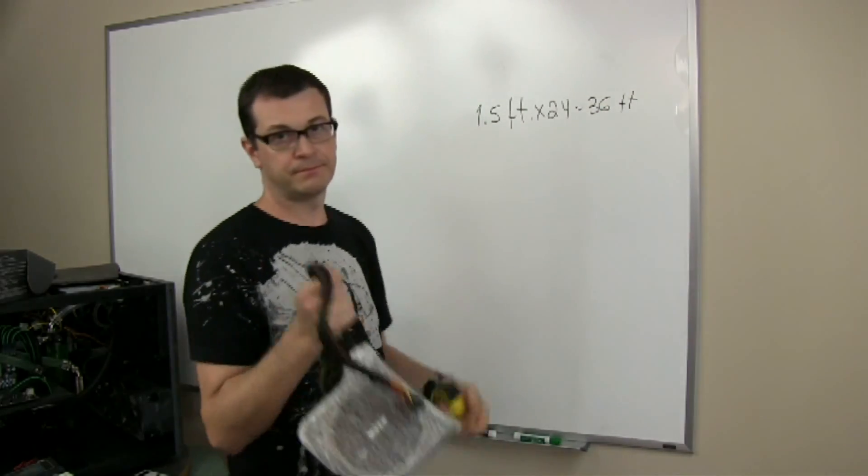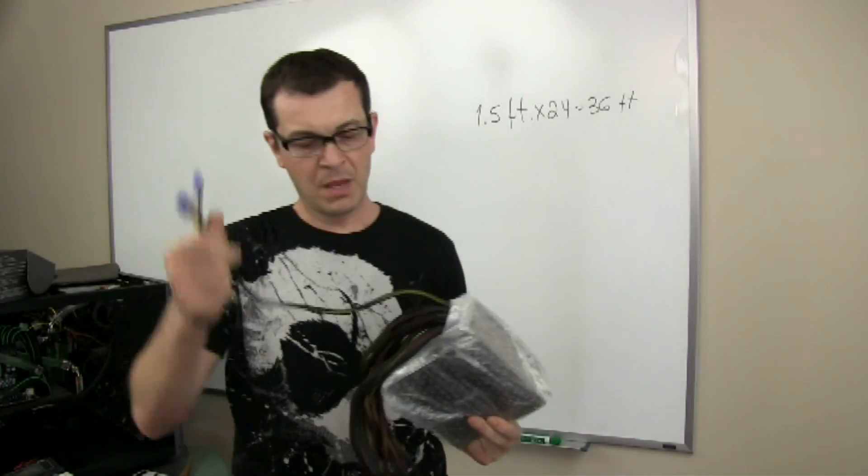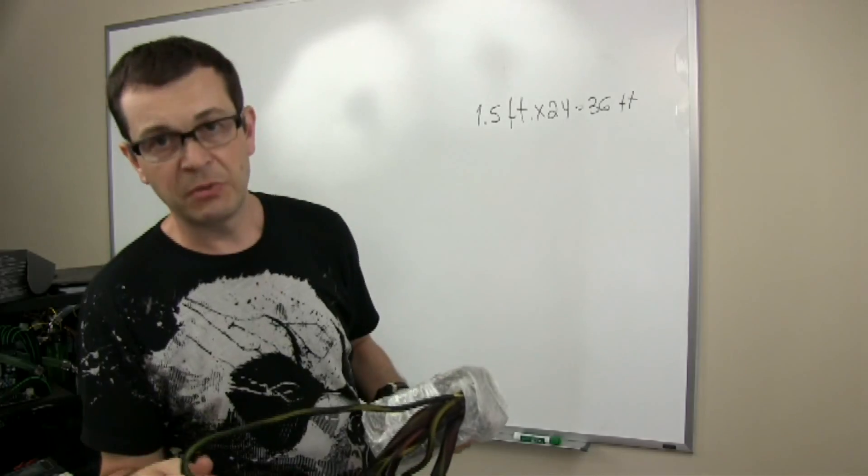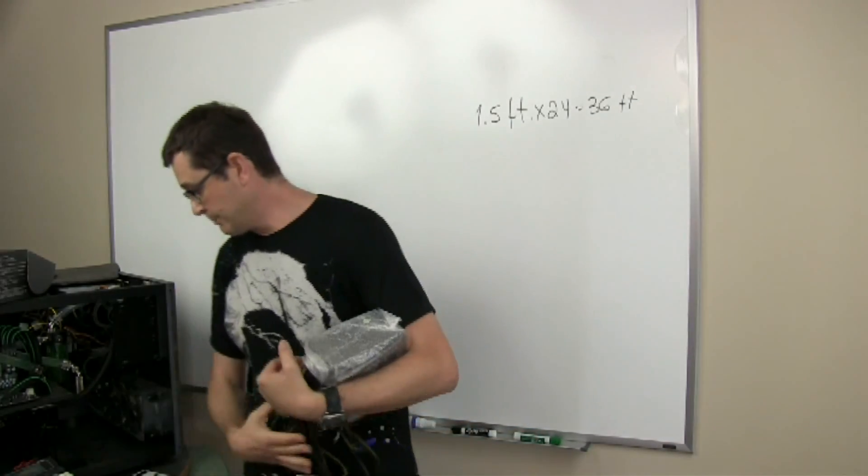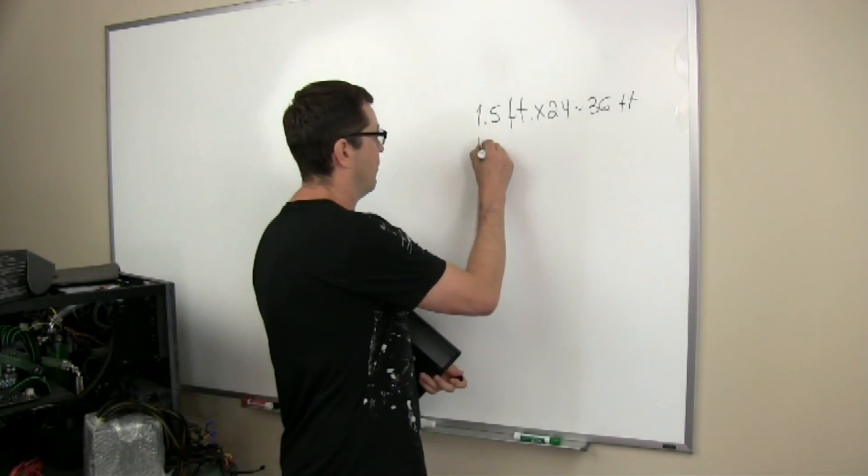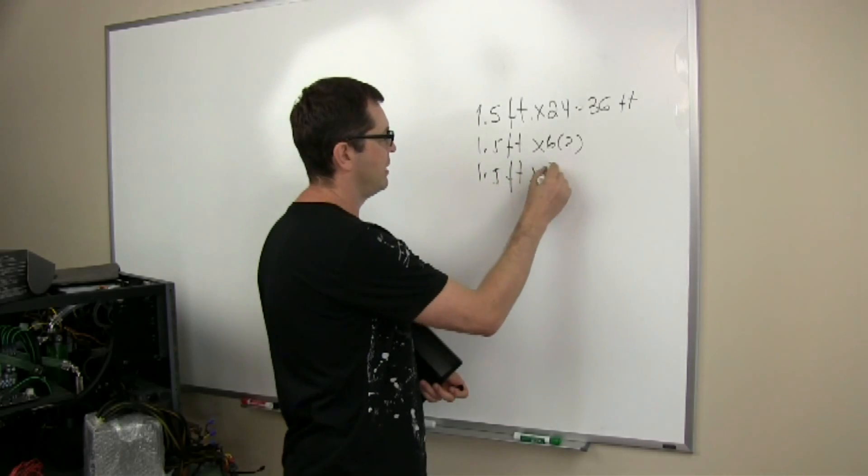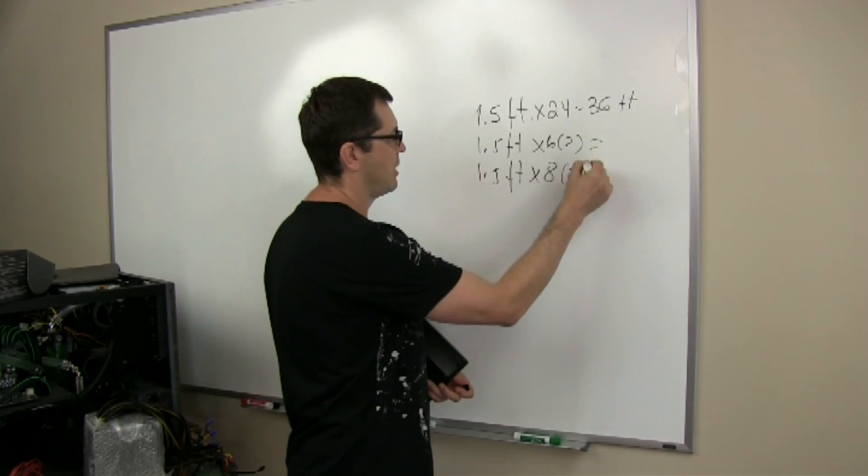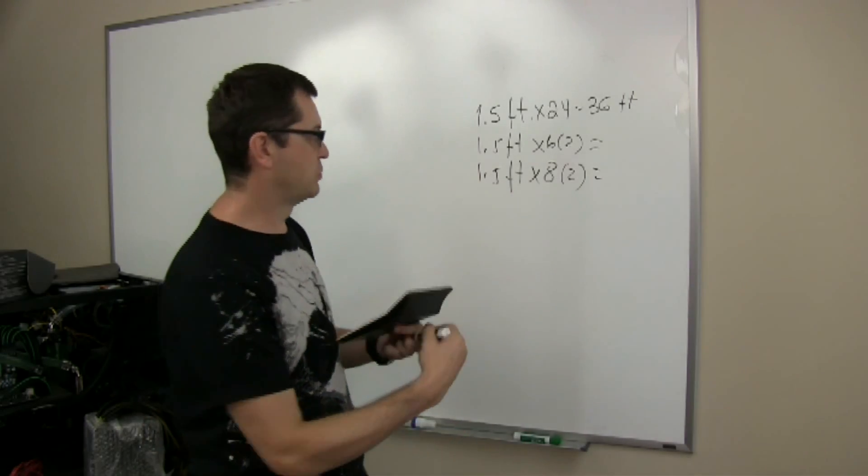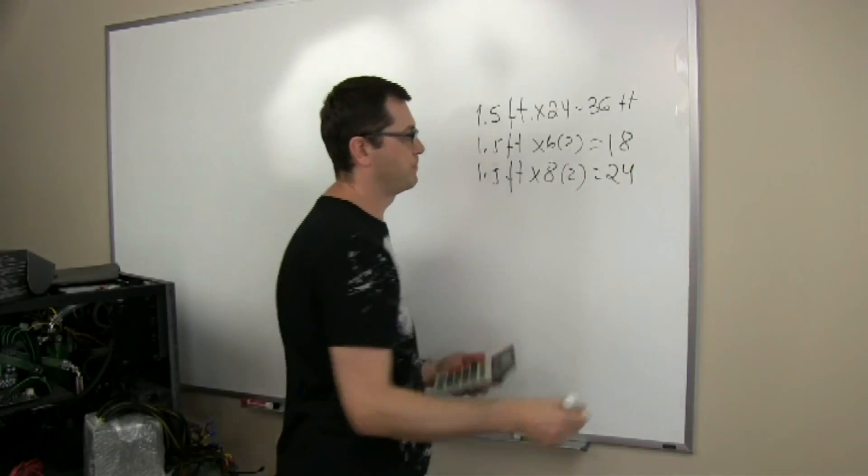Now we do the same job for other stuff, like 6-pin: the same 1.5 multiplied by 6. 8-pin: this will be 8 times by 1.5 feet. And just to take an example, we'll say 1.5 feet 6-pin twice, 1.5 feet 8-pin twice. Using the calculator again: 1.5 multiplied by 12 is going to be 18, and 1.5 multiplied by 16 will be 24.